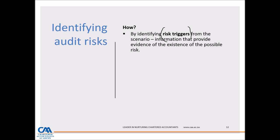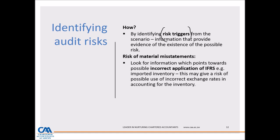For risk of material misstatement, look in the case study for information pointing toward incorrect application of IFRS, or non-compliance with the Companies Act or laws and regulations. For example, if the company imports inventory — by virtue of importing inventory, what are the accounting requirements? You link to IAS 2 and IAS 21. The company is required to capitalize that inventory using the spot exchange rate. What can go wrong? Management might use an incorrect exchange rate. So the risk is: because the company is importing inventory, there is a risk that an incorrect exchange rate may be used.